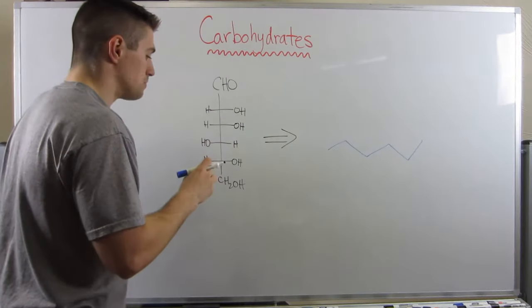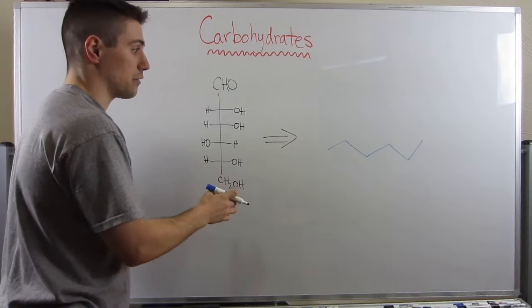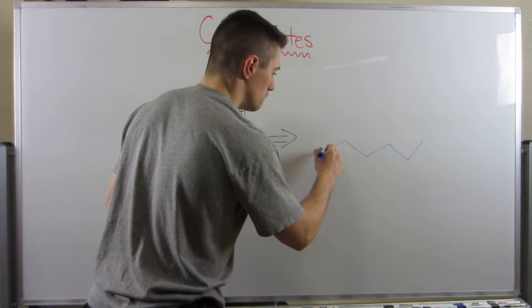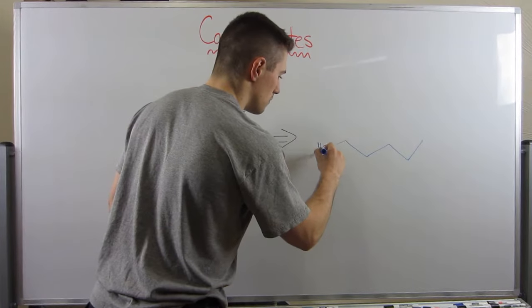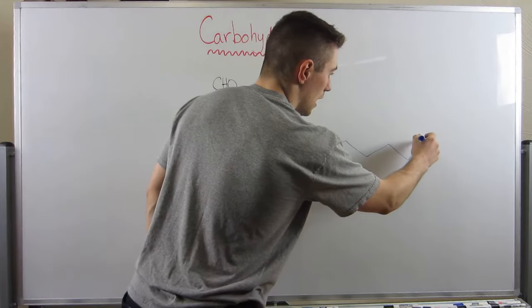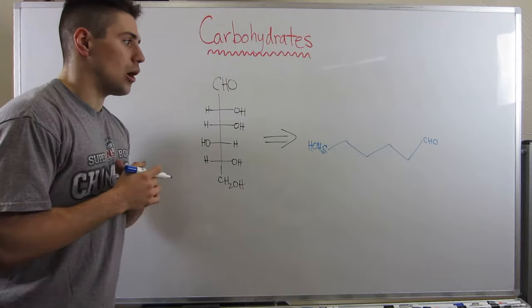So here's kind of how I go about this. We have one, two, three, four, five, six carbons, right? So I'm just going to go ahead and draw a six-carbon chain. Realize that our CH2OH is at the end of the chain. One, two, three, four, five, six, and right here is our aldehyde, our CHO.